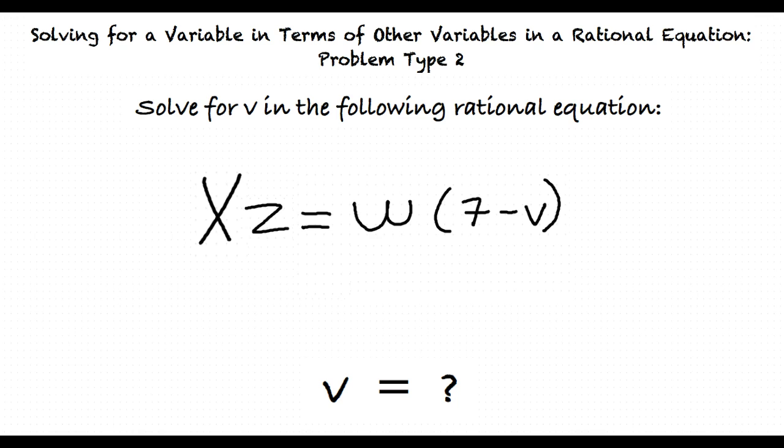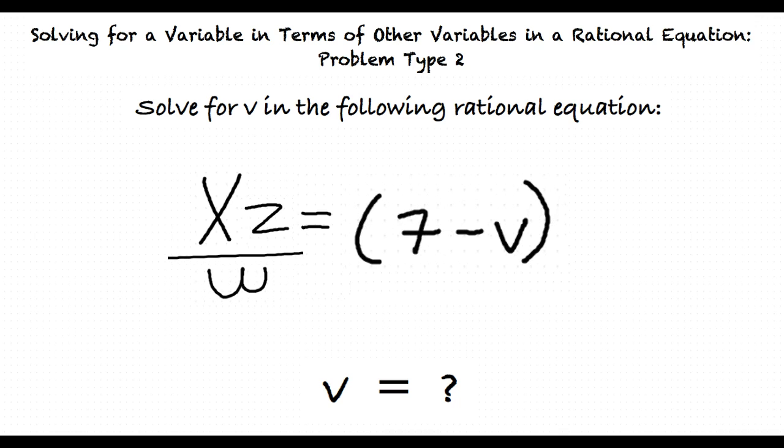Next, we divide both sides by w, thus isolating v as the only variable on its side of the equation. Lastly, we subtract 7 from both sides to result in our final answer.